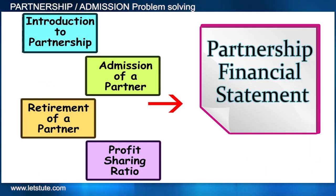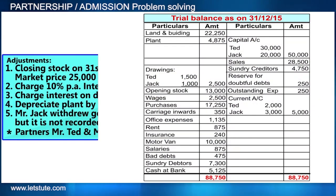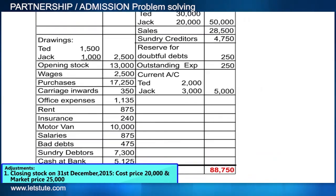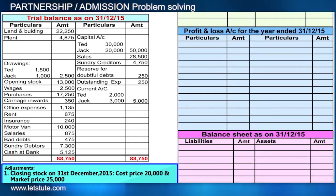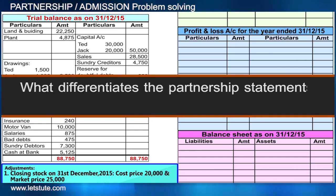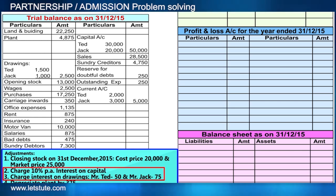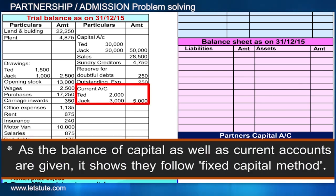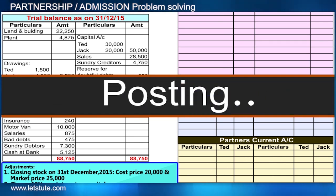Today let's together try and apply all of this knowledge to prepare final statements of a partnership firm with the given information — their trial balance along with some adjustments. We need to prepare the basic format of trading, profit and loss account, and balance sheet as we do for a sole trading concern. What differentiates the partnership statements is that there are balances and adjustments relating to partners' capital accounts. Since we are also given the current account balances and the partners follow the fixed capital method, we will also prepare partners' current accounts.